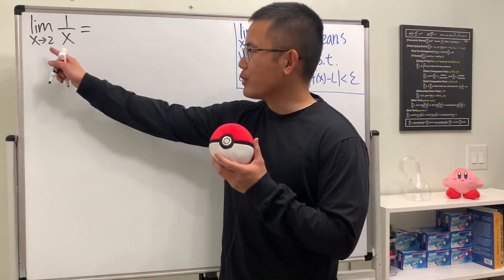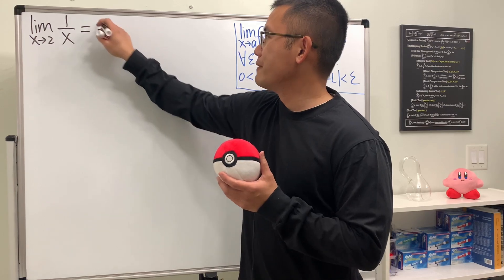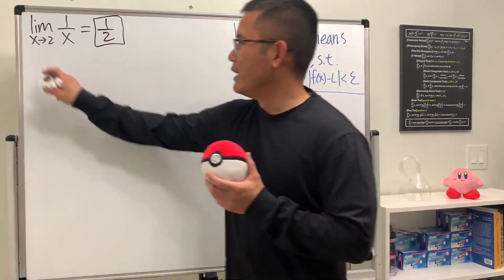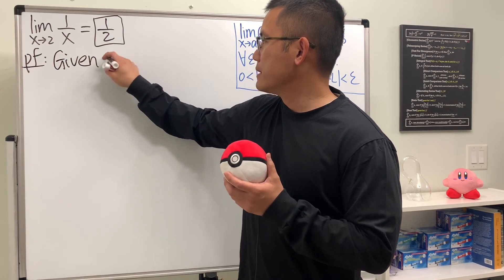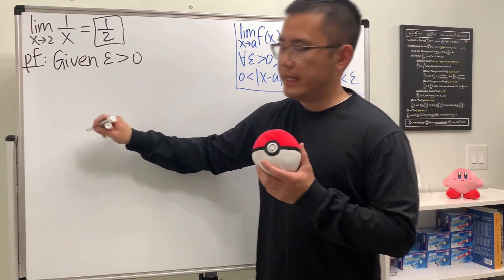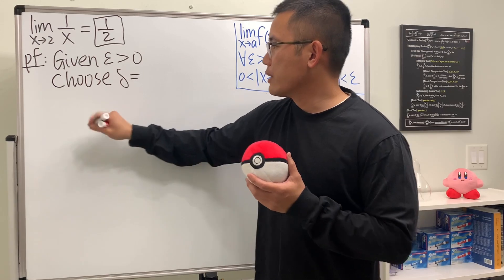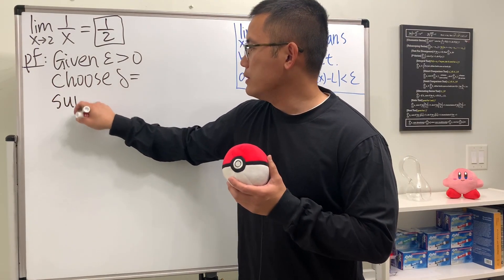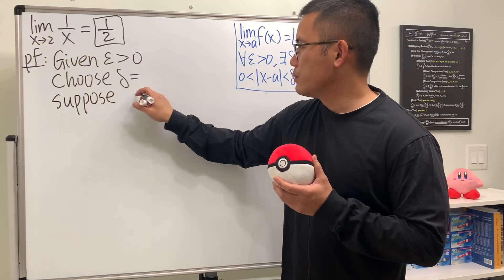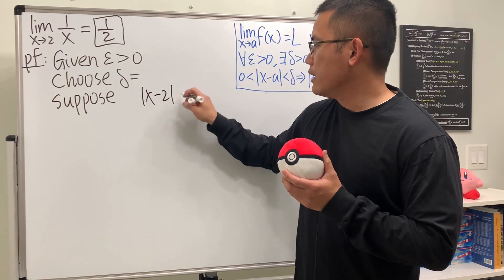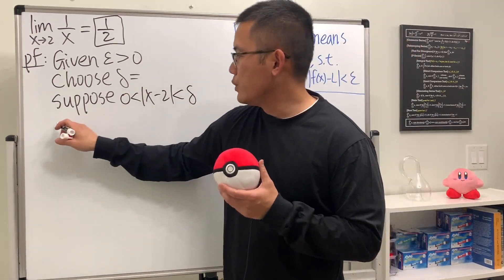For the second example, the limit as x approaches 2 of 1 over x: plug in 2 to get one half. Now the proof — 'pf' — first write 'given epsilon greater than zero,' then 'choose delta' leaving it blank for now. We say 'suppose' absolute value of x minus 2 is between 0 and delta. Lastly we will check.